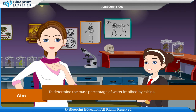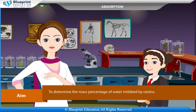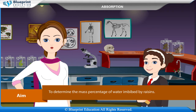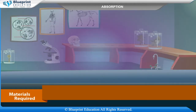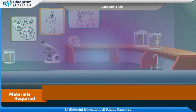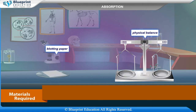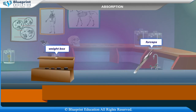Our aim is to determine the mass percentage of water imbibed by raisins. Materials required are: raisins (kishmish), water, beaker, glass, petri dish, blotting paper, physical balance, weight box, and forceps.